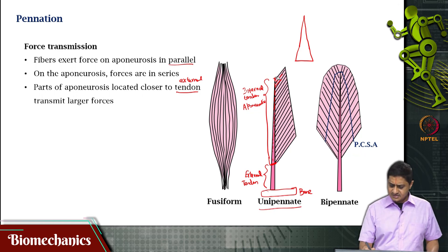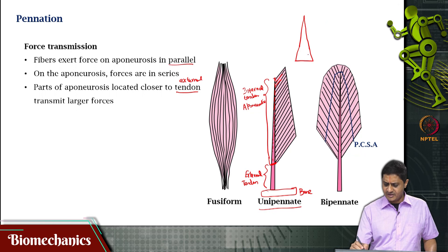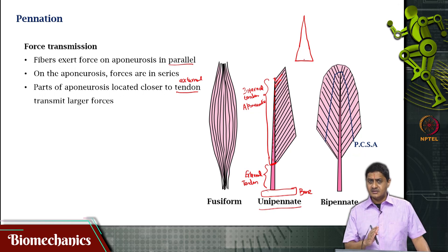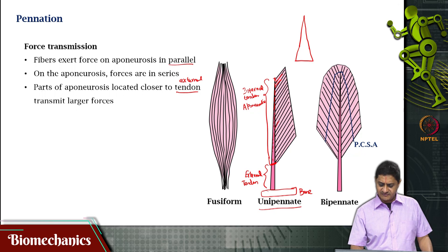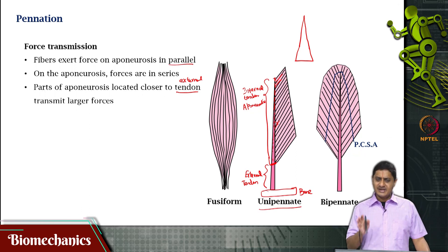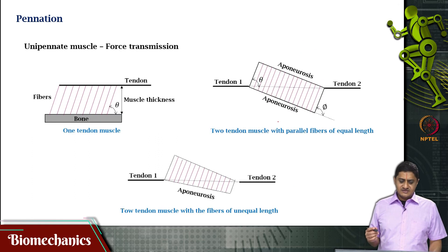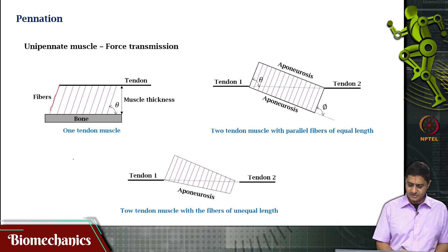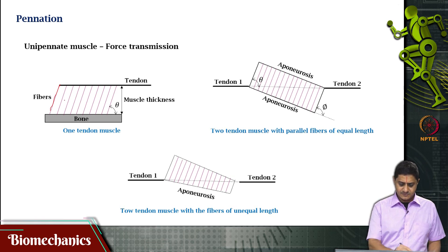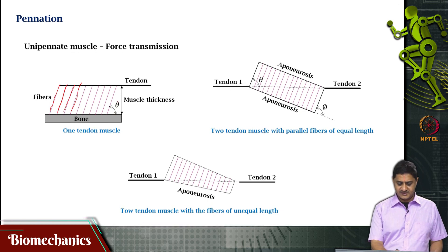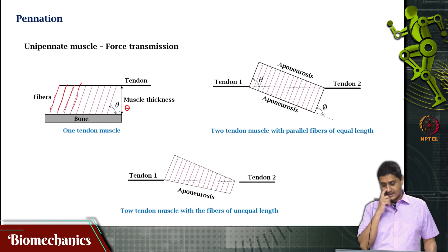Let us zoom in and take only one fiber. We assume for discussion that the fibers are all parallel to each other, and the pennation angle — the angle at which the fiber attaches to the internal tendon — is the same for all fibers. This is an assumption; it is not always true, but it holds in many cases. The fibers are attaching at some angle theta in the unipennate case.